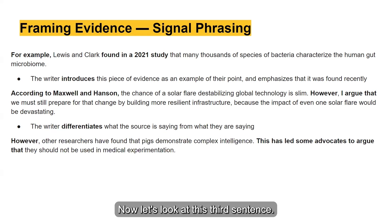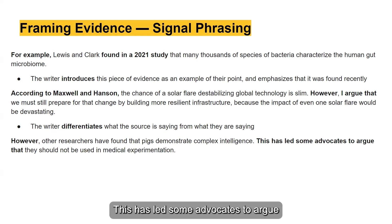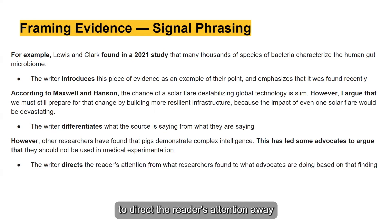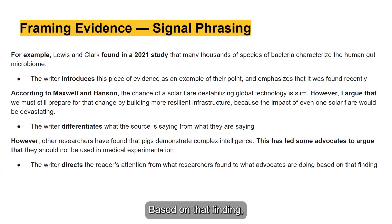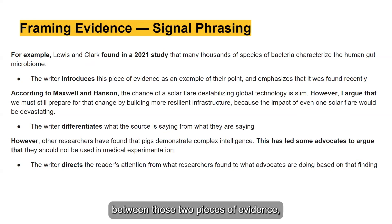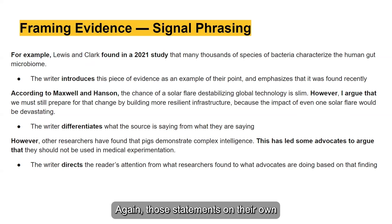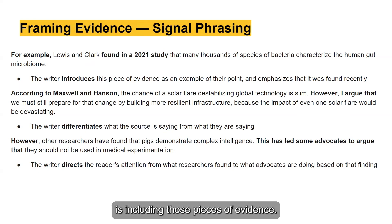Now let's look at this third sentence: "However, other researchers have found that pigs demonstrate complex intelligence. This has led some advocates to argue that they should not be used in medical experimentation." Here, the author uses signal phrasing to direct the reader's attention from what researchers found to what advocates are doing based on that finding, showing the connection between those two pieces of evidence. Without the bolded parts, the reader wouldn't know why the writer is including that evidence.